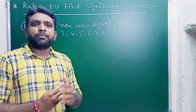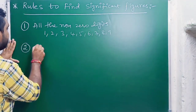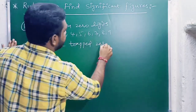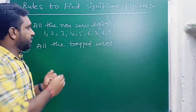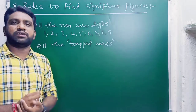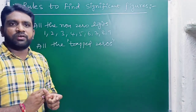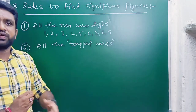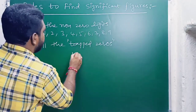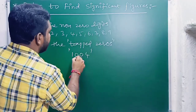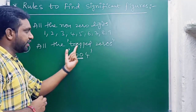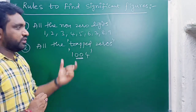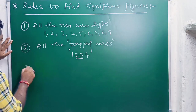Rule two: all the trapped zeros are significant. Trapped zeros are the zeros which come in between non-zero digits. For example, in 1004, these two zeros are in between non-zero digits, so they are trapped zeros and are also considered as significant figures.